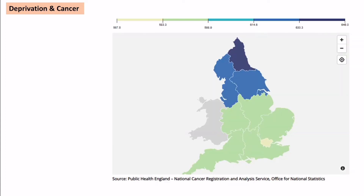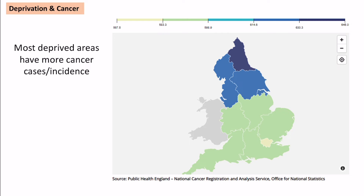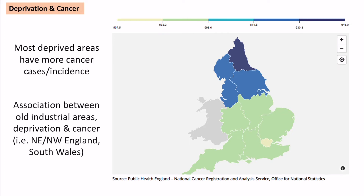This links to the UK's historical past. There are more cancer cases in deprived areas, often in industrial areas such as the north-east and north-west of England and south Wales. This map shows 646 cases per 100,000 in the north-east, with the north-west equally high. There is a clear north-south divide where London and the south and home counties have much lower rates due to generally lower deprivation.